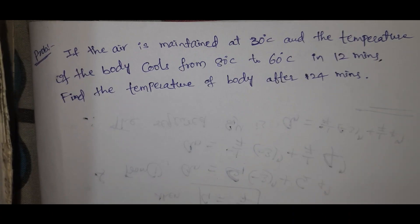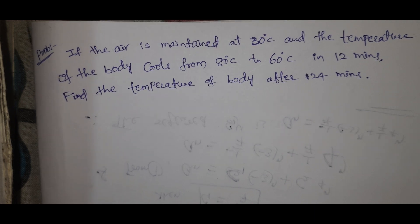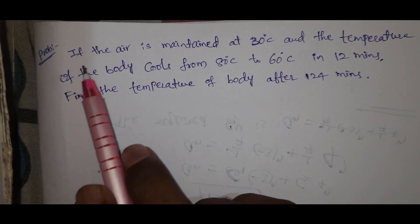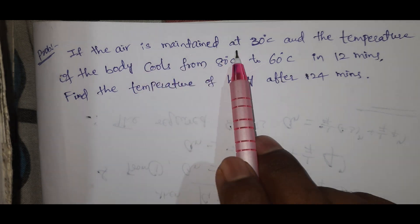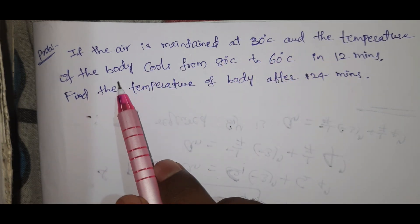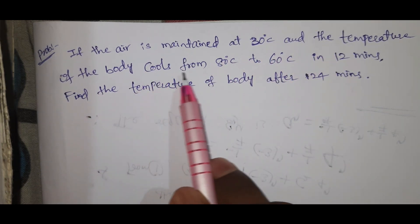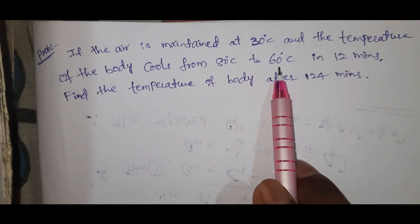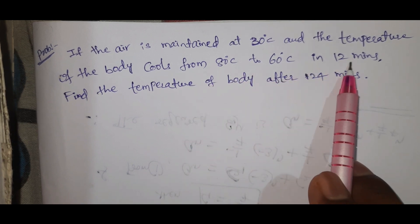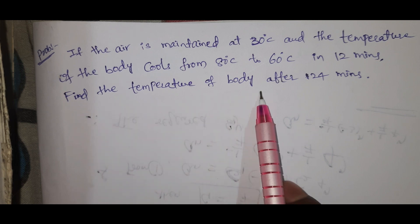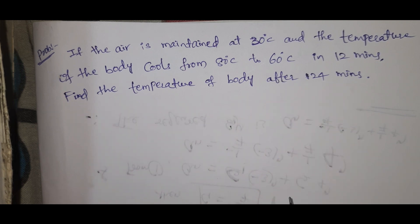Hi viewers and welcome to Rajesh Lekaloo. Today our topic is Newton's law of cooling problem. The air is maintained at 30 degrees centigrade and the temperature of the body cools from 80 degrees centigrade to 60 degrees centigrade in 12 minutes. Find the temperature of the body after 24 minutes.